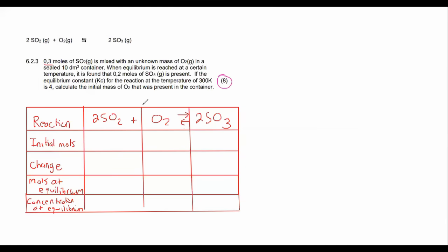Then what we do is we go fill in all the values. So they tell us that 0.3 moles of SO2, so 0.3 moles of SO2 is mixed with an unknown mass of oxygen. Okay, so we have no idea what that one is over there.